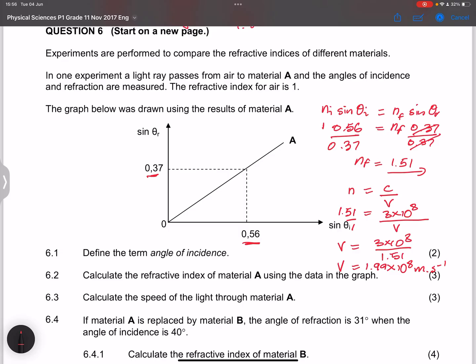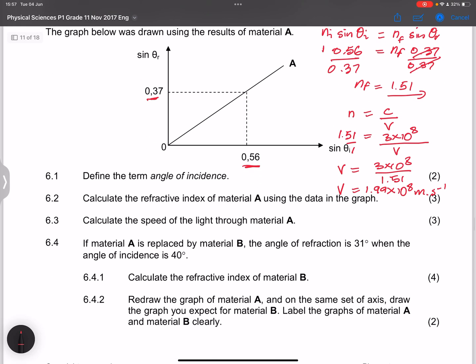So the next question, they say, if material A is replaced by material B, the angle of refraction is 31 degrees when the angle of incidence is 40 degrees. They say calculate the refractive index of material B. So once again, we are going to do exactly the same thing.